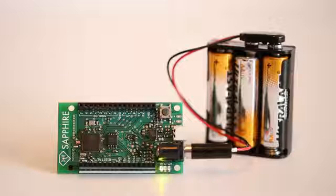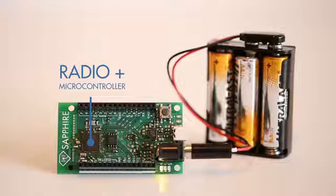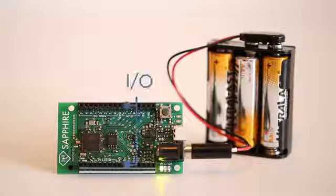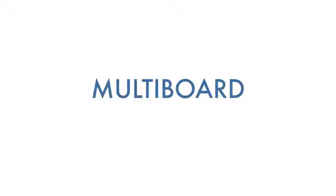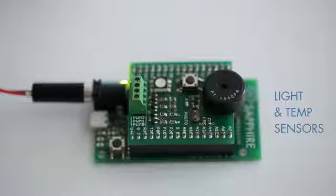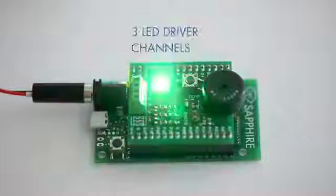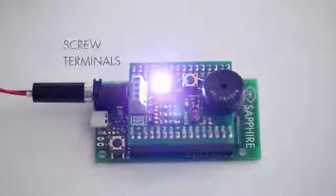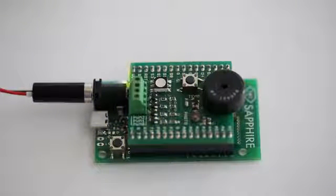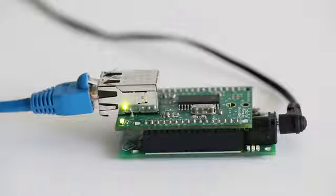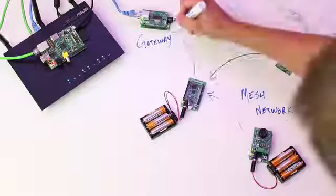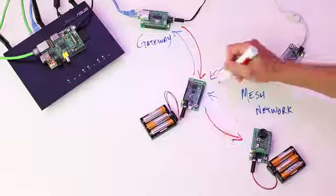The Sapphire platform revolves around the Blue Sapphire, a microcontroller development board with an integrated radio. Two header connectors provide access to IO and plug-in shields. The multi-board shield combines light and temperature sensors, three LED driver channels, and easy access through terminals. The Ethernet shield transforms a Blue Sapphire into the network gateway, bridging all of your Sapphire devices to your existing local network.